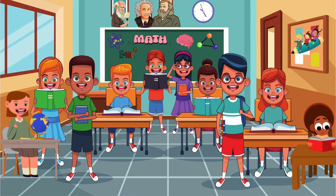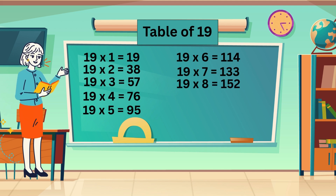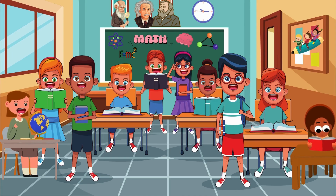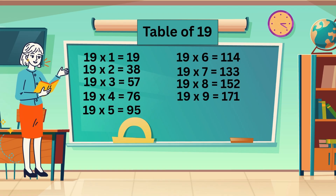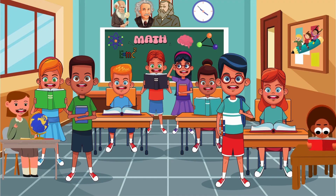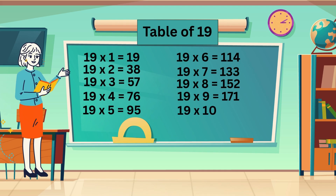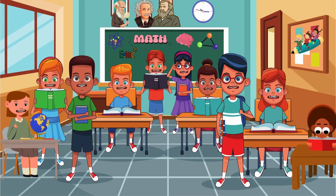19 sevens are 133. 19 eights are 152. 19 nines are 171. 19 tens are 190.